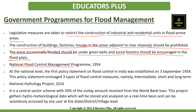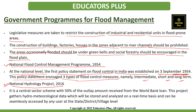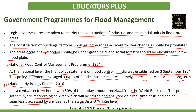At the national level, the National Flood Control Management Program of 1954 was the first policy statement on flood control in India, established on 3rd September 1954. It outlines three types of flood control measures: intermediate, short-term, and long-term. The National Hydrology Project 2016 is a central sector scheme with 50% of the outlay received from a World Bank loan. It collects hydrometeorological data, stores and analyzes data on a real-time basis, and can be seamlessly accessed by any user at the state, district, or village level.